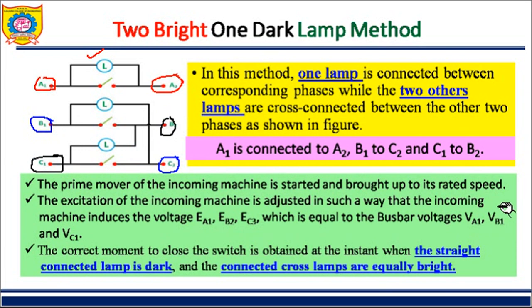When we make this change in connections, one lamp is connected between the corresponding phase while the two others are cross-connected between the other two phases. So in this method, we are making a different connection for one lamp versus the other two lamps.